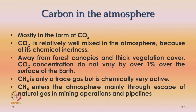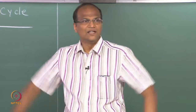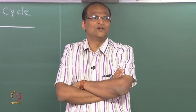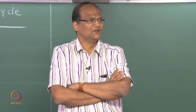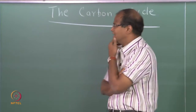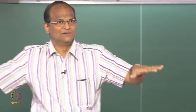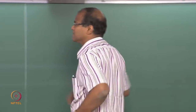Carbon in the atmosphere is mostly in the form of carbon dioxide. Carbon dioxide is relatively well mixed in the atmosphere because of its chemical inertness — it does not react so easily. Because of its well-mixed nature, it is distributed uniformly throughout the atmosphere. The carbon dioxide concentration is pretty much the same whether it is in the United States, Asia, or Australia. However, there is a caveat: this should be away from forest canopies and thick vegetation cover. Because of heavy photosynthesis, there may be a change in carbon dioxide near such areas.